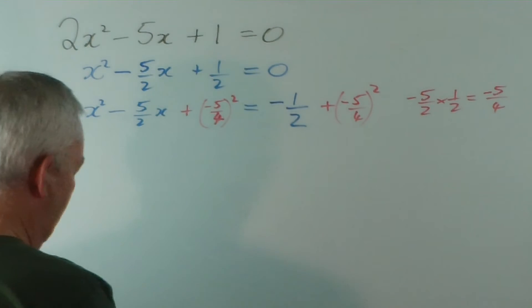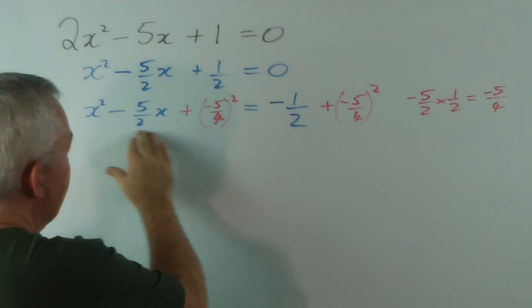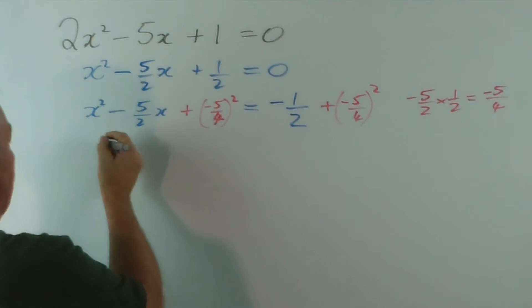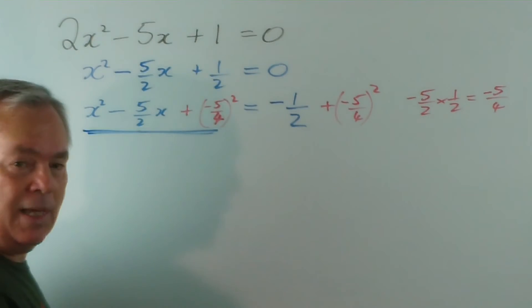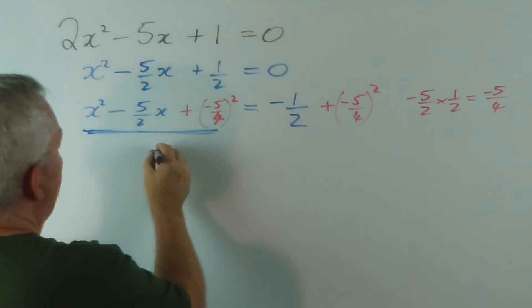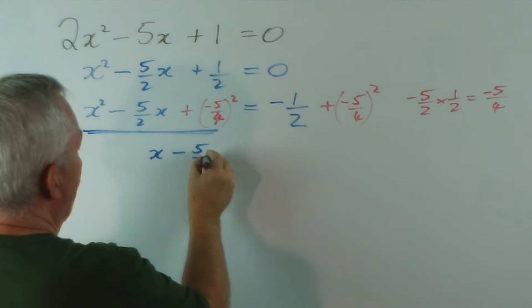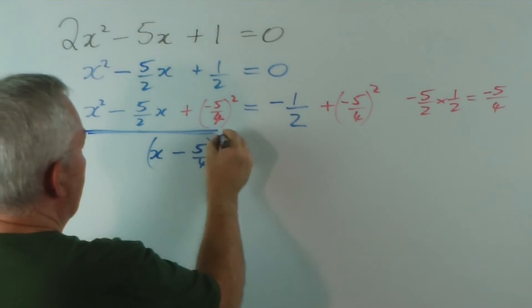We haven't worked this out yet. But this is now a complete square. I will underline it because it's because of that that this whole process has the name completing the square. And this is x minus 5 on 4, all squared.